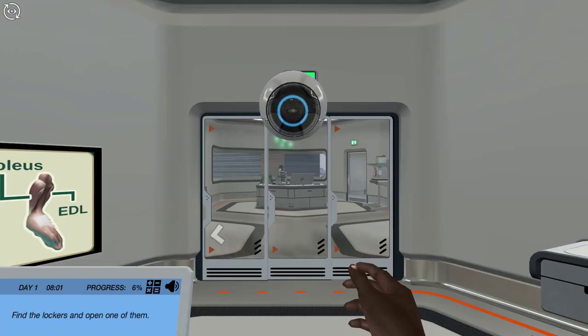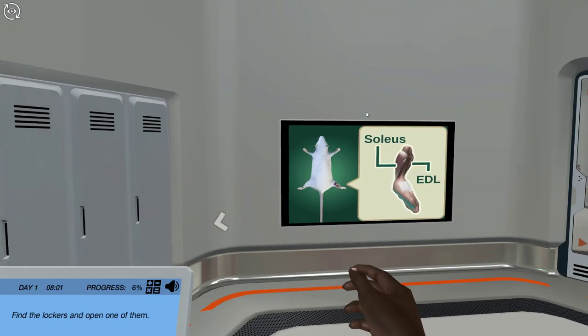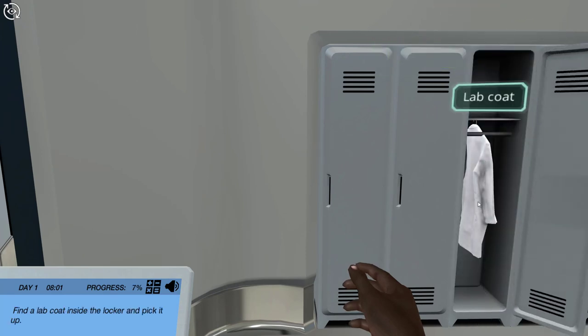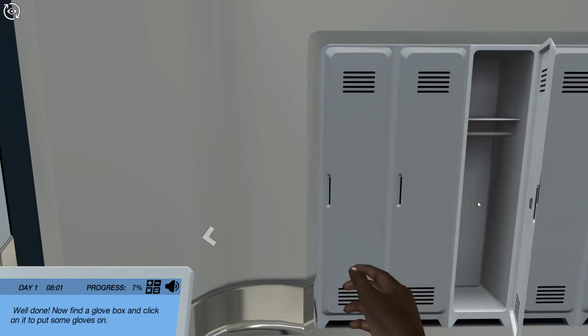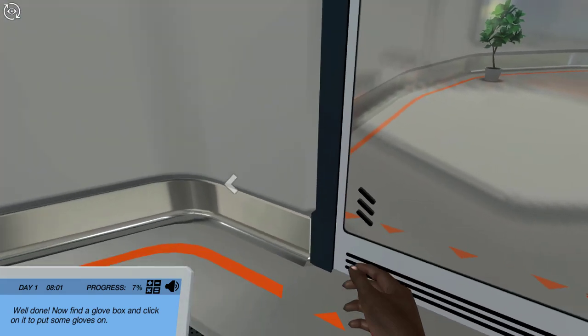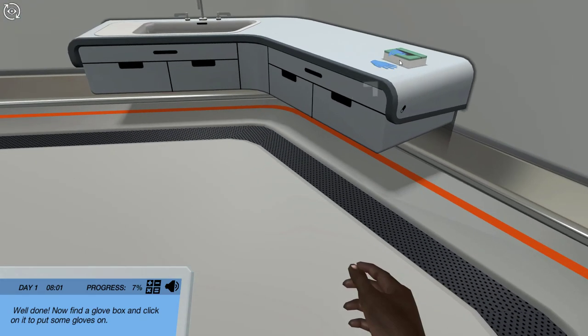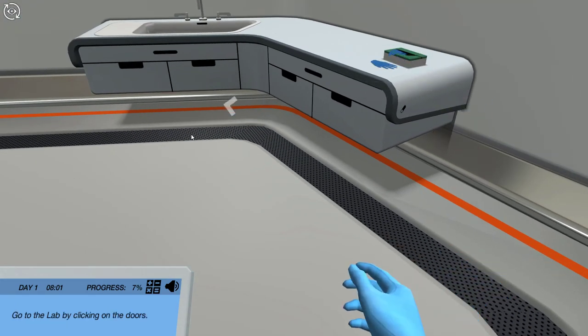Find the lockers and open one of them. Find a lab coat inside the locker and pick it up. Well done. Now find a glove box and click on it to put some gloves on. Go to the lab by clicking on the doors.